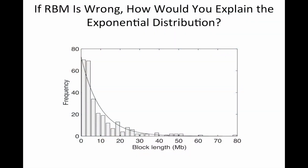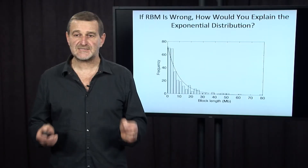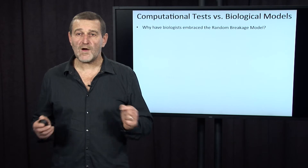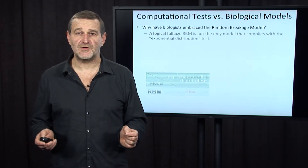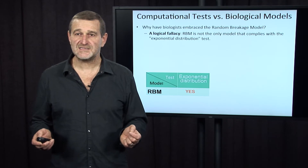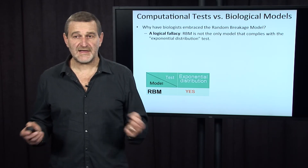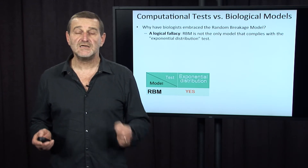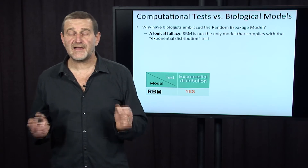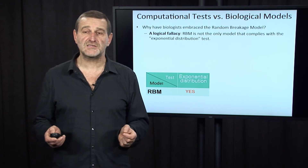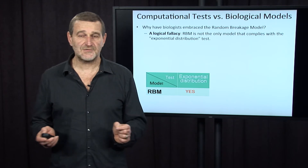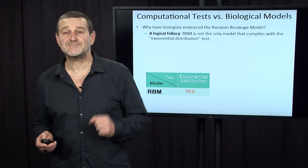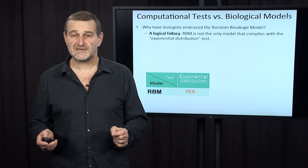But if the random breakage model is incorrect, how would you explain the remarkable fit between the observed lengths of synteny blocks and the exponential distribution? Why have biologists embraced the random breakage model? Actually, it was a logical fallacy. RBM — random breakage model — is not the only model that complies with the exponential distribution test. It is correct to claim that random breakage model implies exponential distribution,